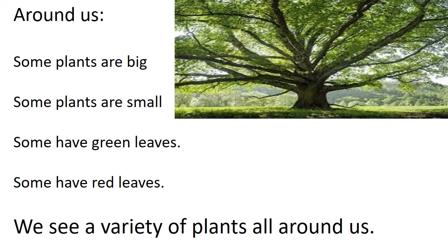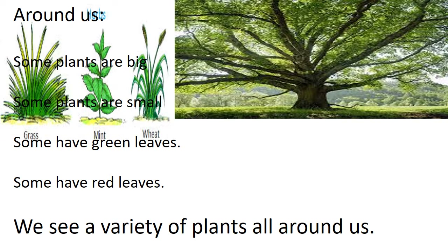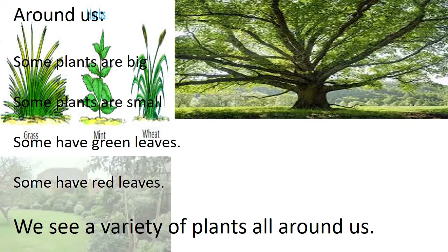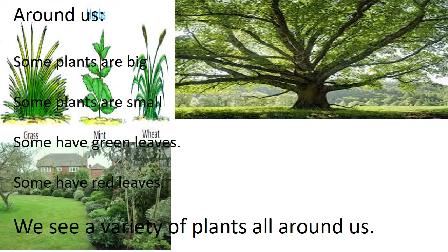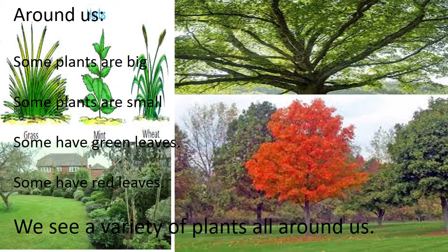There are some big plants like trees. Some plants are small — grass, mint, wheat — they are very small. Some plants have green leaves; many of the plants have green leaves. Some plants have red leaves, or red and orange leaves. So we see a variety of plants all around us.